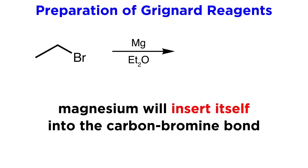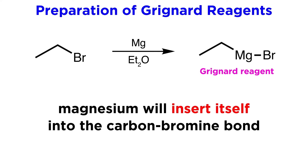By some inorganic chemistry that is beyond the scope of this tutorial, a magnesium atom will insert itself into this carbon-bromine bond, which produces a Grignard reagent.